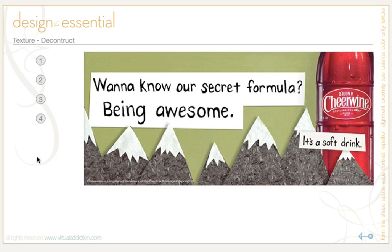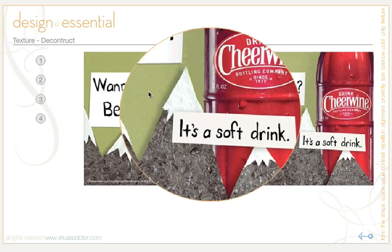The final example in our texture section is the Cherry Wine Soft Drink advertisement. You can see right away that this contains a lot of texture. The most prominent texture is in the mountains — they have a gritty look and they pop off the page due to the drop shadow. If you look closely, the background is also textured, like a green textured paper. These both contrast well with the product shot.